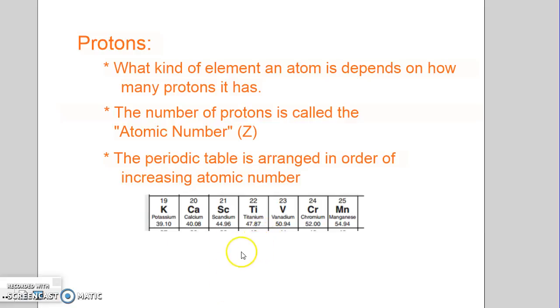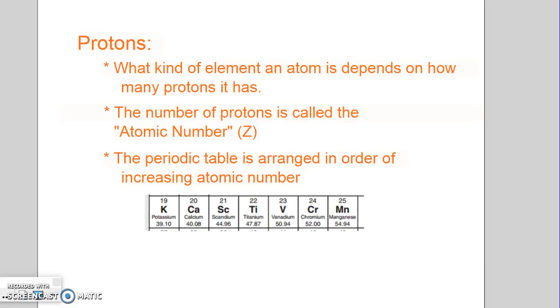If you take a titanium atom and give it one more proton, now it has 23, it's no longer titanium, it's now vanadium, and that's how that works. So which element an atom is depends only on its number of protons, which we symbolize Z, and we call that the atomic number. That's the only thing that matters to determine what element it is.